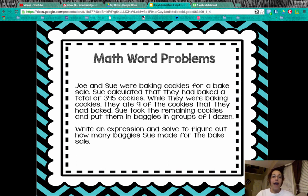So let's look at an example here. We have Joe and Sue who were baking cookies for a bake sale. Sue calculated that they had baked a total of 345 cookies. While they were baking cookies, they ate nine of the cookies that they had baked. Sue took the remaining cookies and put them in baggies in groups of one dozen. Write an expression and solve to figure out how many baggies Sue made for the bake sale.